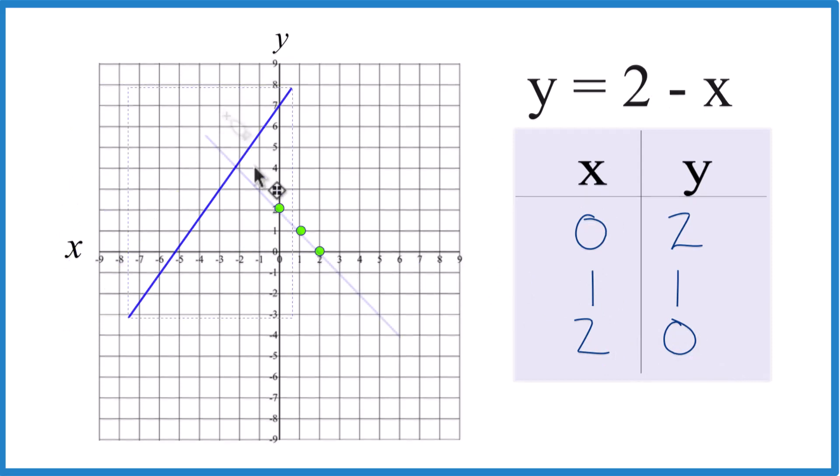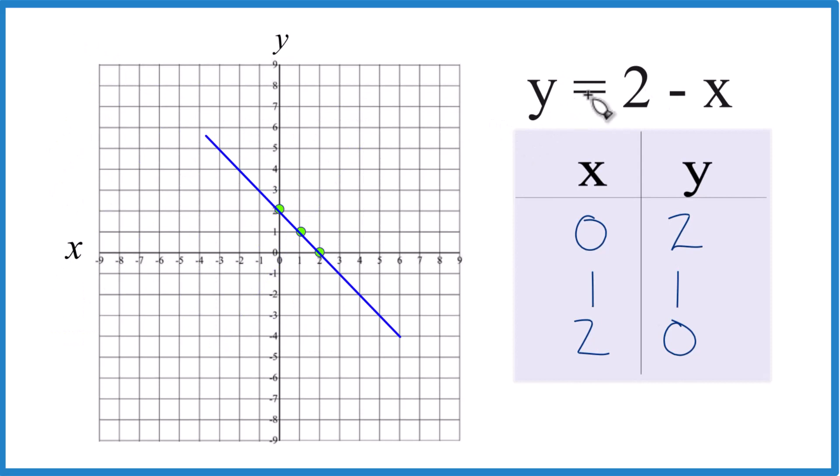There's our line. Let's put a line through it. And that's the graph for y equals 2 minus x. Let's put some arrows here to show it goes infinity, and that's it.